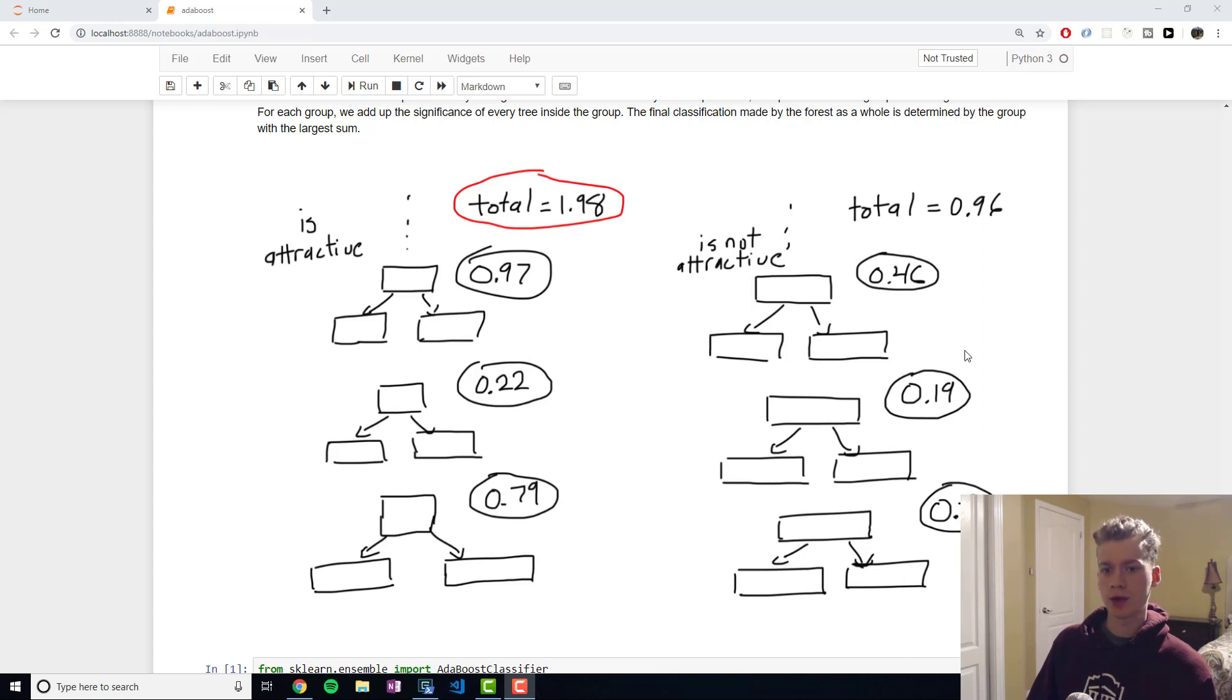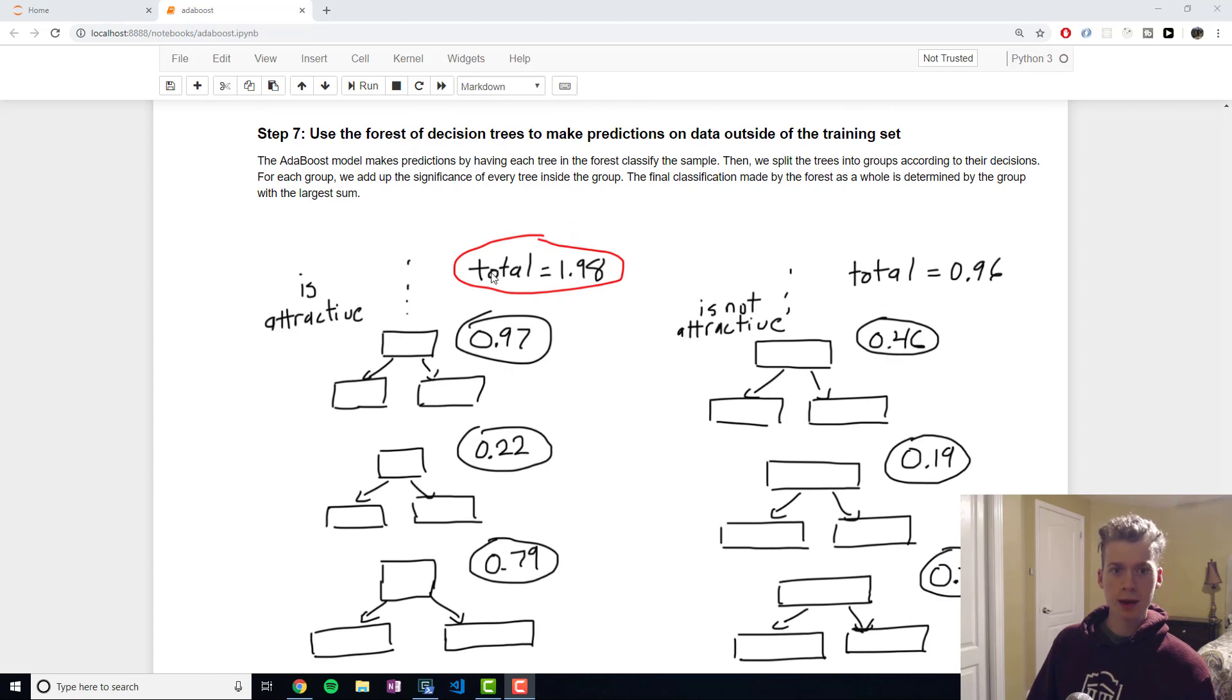We group all the trees that predicted that the sample corresponded to a person who was attractive, and then all the trees that predicted the person was not attractive. Then we sum up the significance and we end up going with the one with the largest significance. To our left right here, 1.98 is larger than 0.96, and so the final prediction made by the model is going to be that the person or sample is attractive.